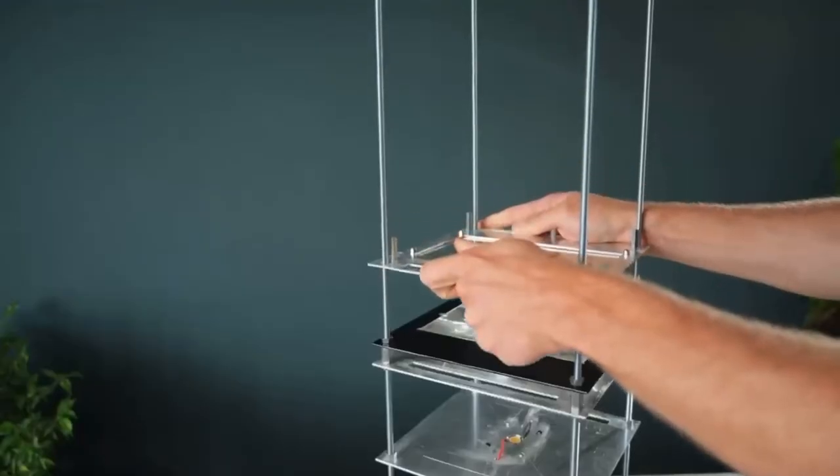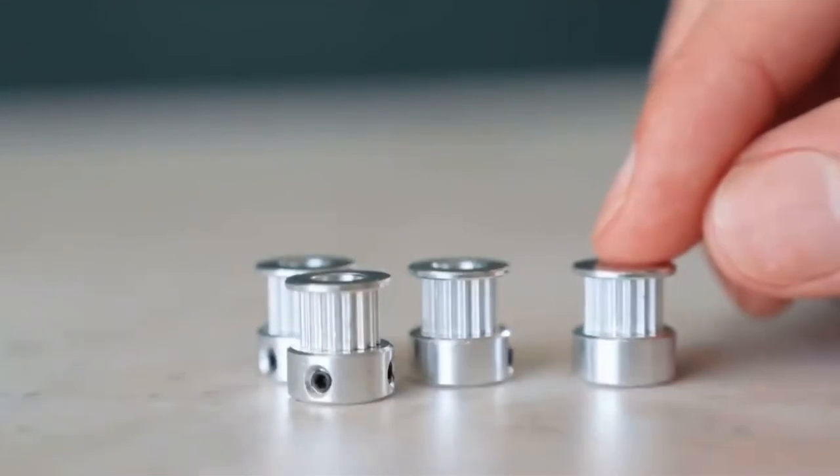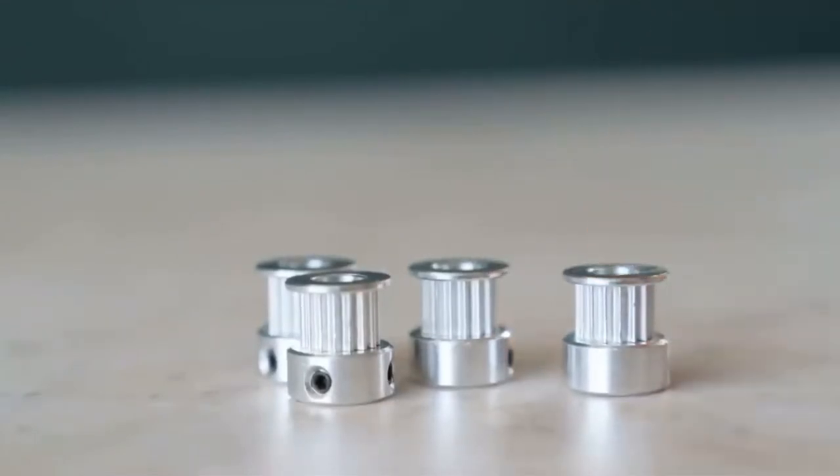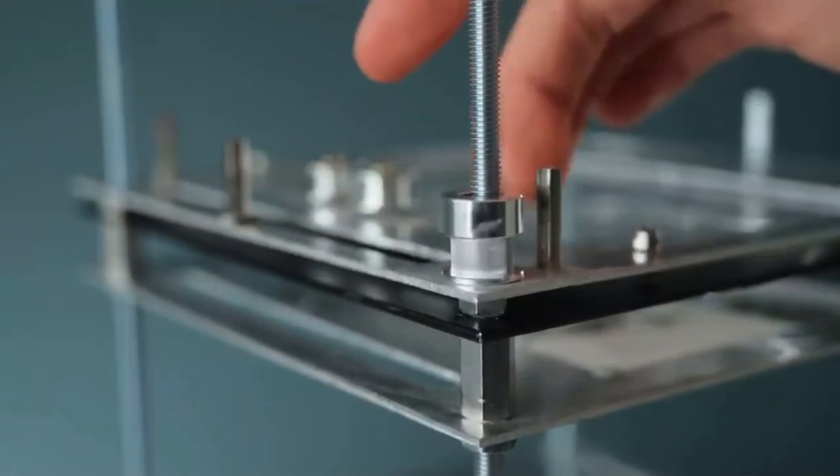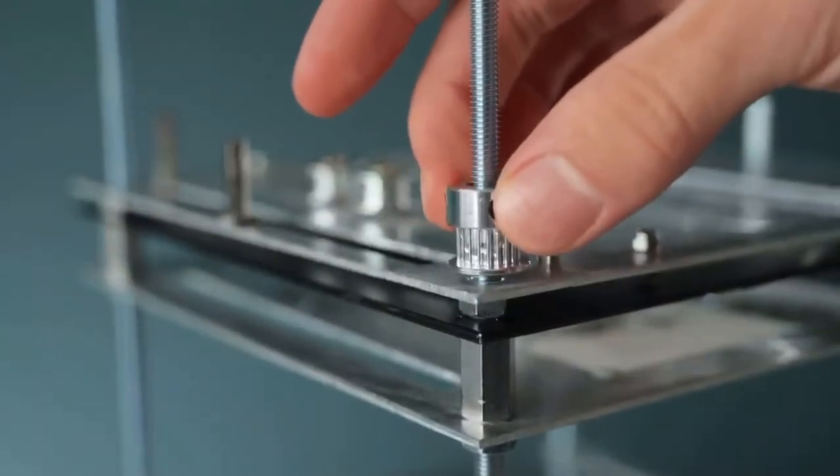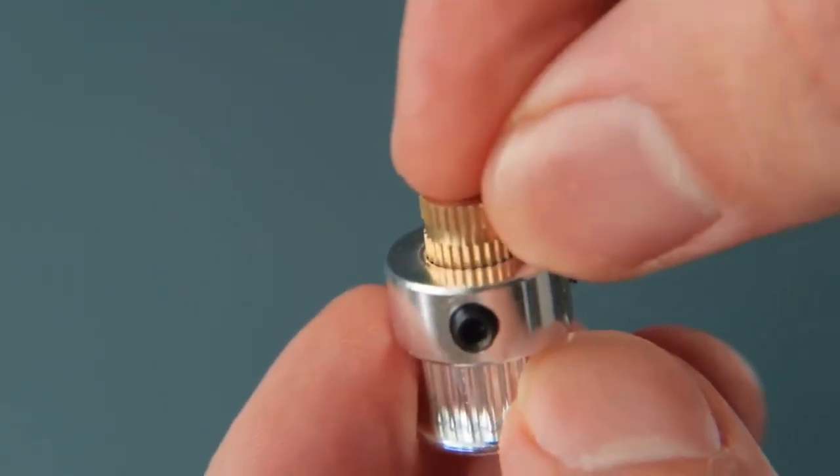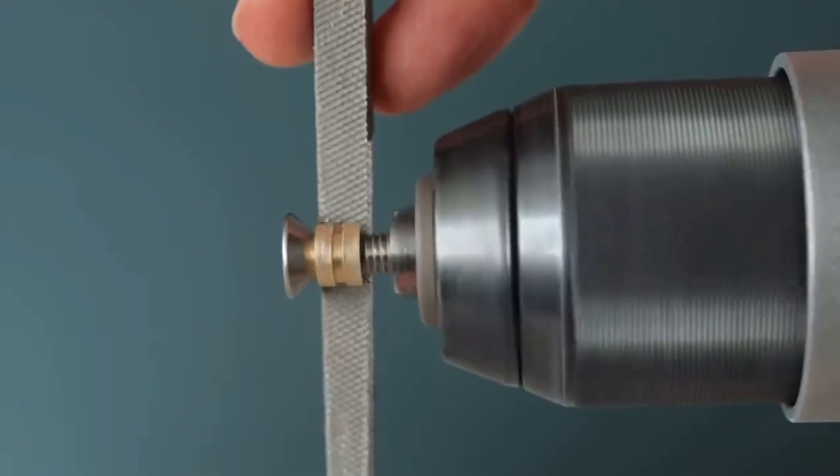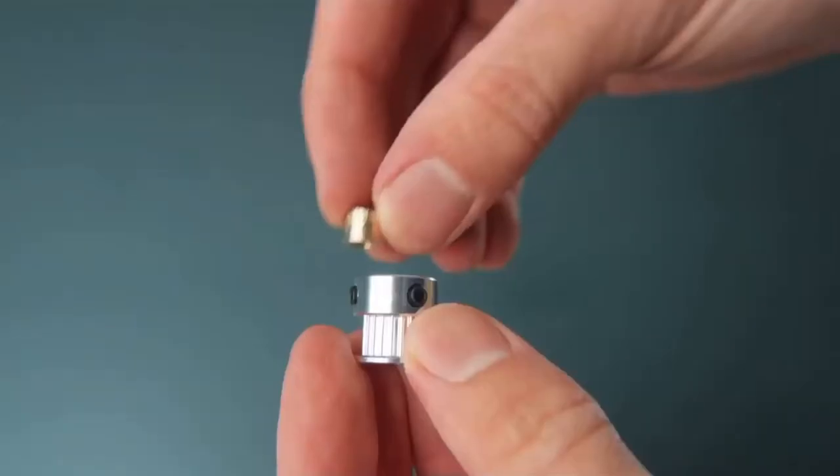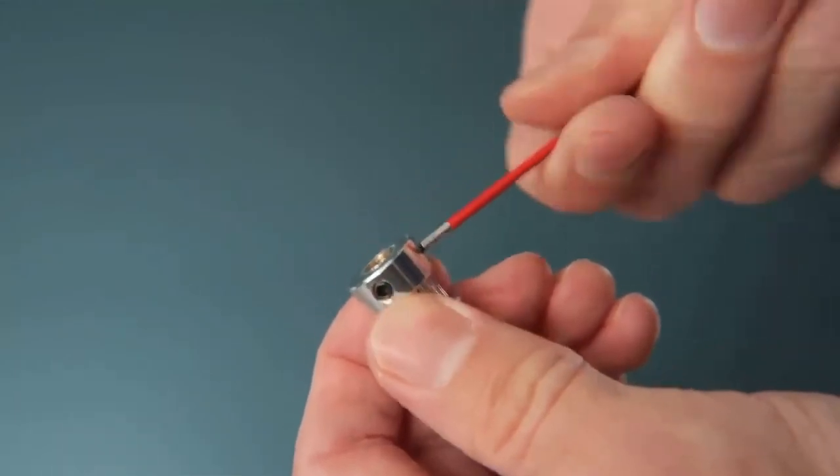So to get each corner of this platform to rise and fall in unison, we're going to utilize a set of four GT2 timing belt pulleys. But as you can see, they don't bite the rods, so we need to add some threads to them. An easy way of doing this is to get some threaded inserts and... oh, well, they're slightly too large, so a quick spin in a drill with a file trims them down to size.